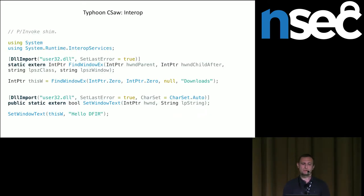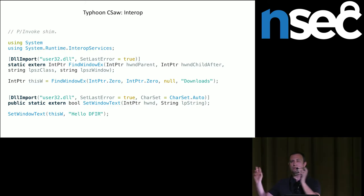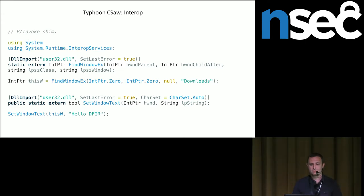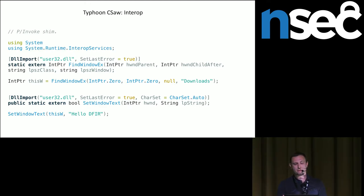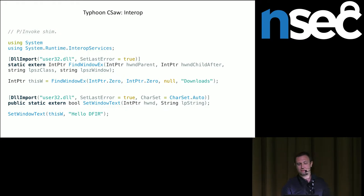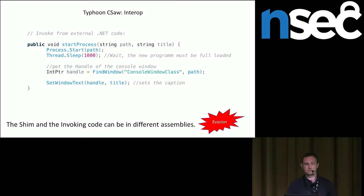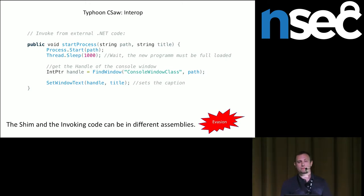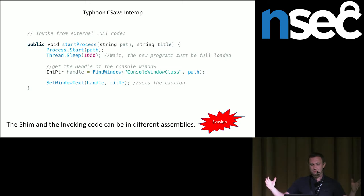Interop essentially works on the DllImport attribute on your function. You instrument it to say that's external code — somewhere over there, after compilation, it will be manageable at runtime. For example, in this case we find a window and set a window's title, involving User32.dll. That's a platform invoke — a shim. From our cradle we say I want FindWindow, which will be found in User32.dll, and set a window title on it. The shim and the invoking code can be in different assemblies, which plays towards our evasion mechanism.